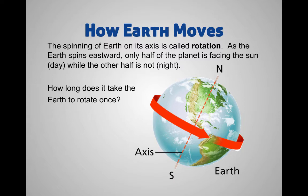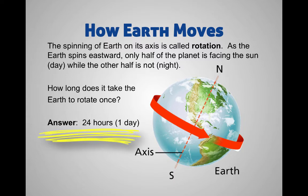How long does it take for us to rotate once? Think of day and night — how long does that take? It's 24 hours, right? That's one day. One spin on its axis — that is one day, one rotation.